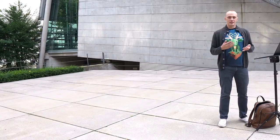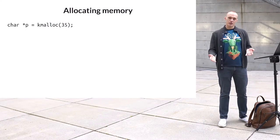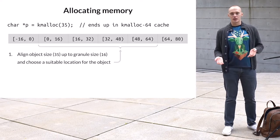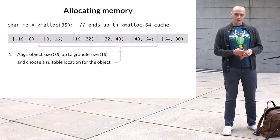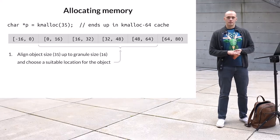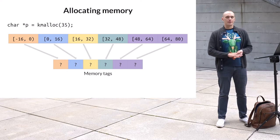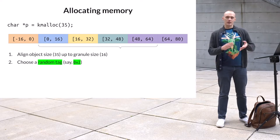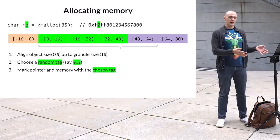Let me show you how MTE-based KASAN works. We'll start with how it detects slab out-of-bounds bugs. Let's say the kernel wants to allocate 35 bytes via kmalloc. First, the slab allocator rounds the requested size up to the granule size, then it chooses a suitable memory location — for our allocation, the most fitting kmalloc cache is kmalloc-64, so the total size of the allocated object will be 64 bytes. Before a slab object is allocated, its memory tags already have some values from previous operations. After choosing the allocation, the allocator generates a random tag — let's say this tag got the value 2. Then the allocator marks both the pointer and the memory with this tag, storing the tag in the top byte of the pointer.